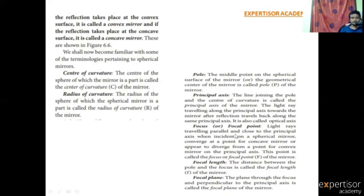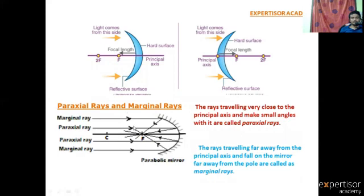Next, Focus or Focal Point: light rays travelling parallel and close to the principal axis, when incident on a spherical mirror, converge at a point for a concave mirror, or appear to diverge from a point for a convex mirror, on the principal axis. This point is called the focus or focal point. For the concave mirror, all these light rays are converging, and this point is called the principal focus.